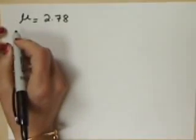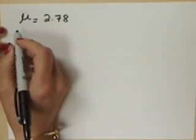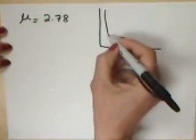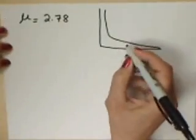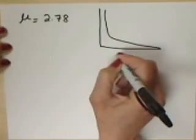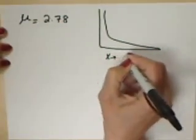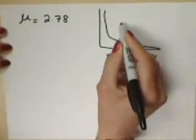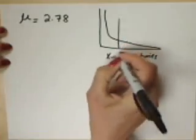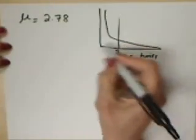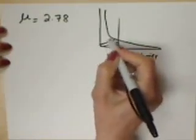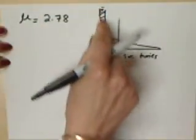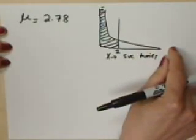We want to know what is the probability that a customer service time is less than 2 minutes. So if I were to draw this on an exponential curve, x which is service times, I want to know what's the probability that x would be 2 minutes or less. That would be this area right here. And I know that the total area under the curve always equals 1.